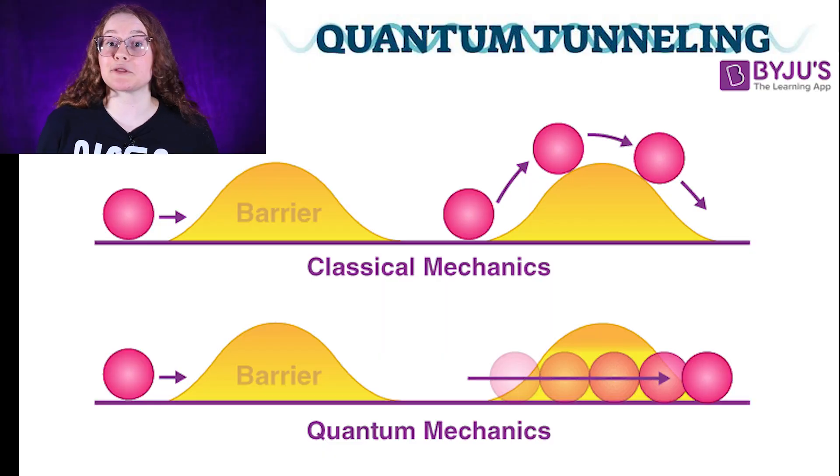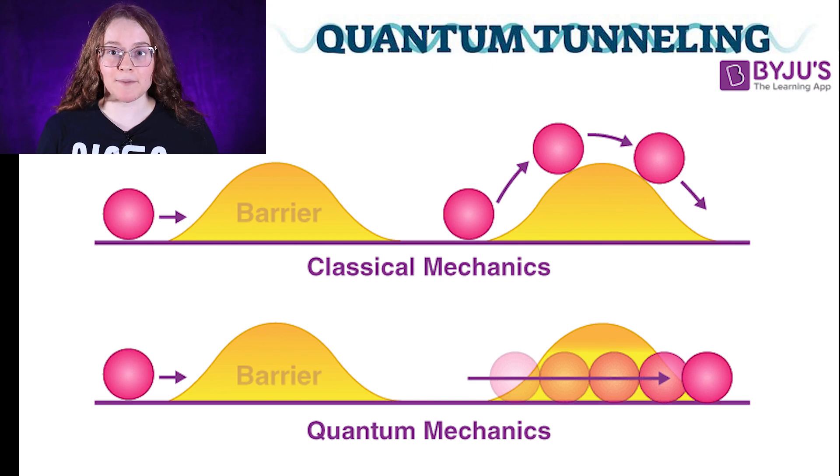Even at the high temperatures found deep in the cores of stars like our sun, atomic nuclei don't have enough energy to crash through the electromagnetic barrier. Instead, they rely on quantum tunneling to sneak through the barrier into the region where the strong force dominates. In other words, quantum tunneling is what makes nuclear fusion possible in stars like our sun, which means that life on Earth could not exist without it.